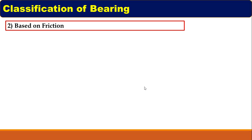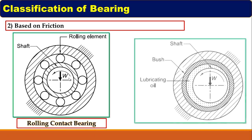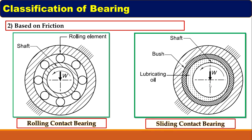The second way of classification is based on friction. The first figure shows the bearing having rolling motion and thus this bearing has rolling friction, so this type of bearing is called a rolling contact bearing. The second picture shows the bearing in which there is a sliding motion — the shaft slides on the inner surface of the bearing — so this type of bearing is called a sliding contact bearing.